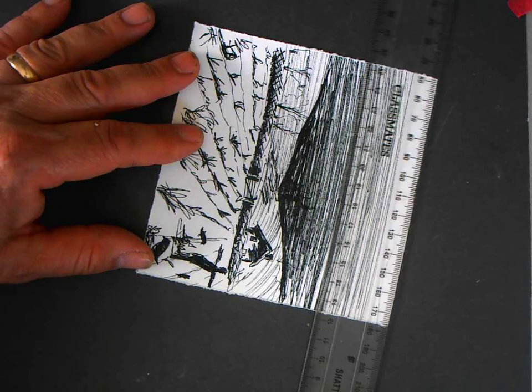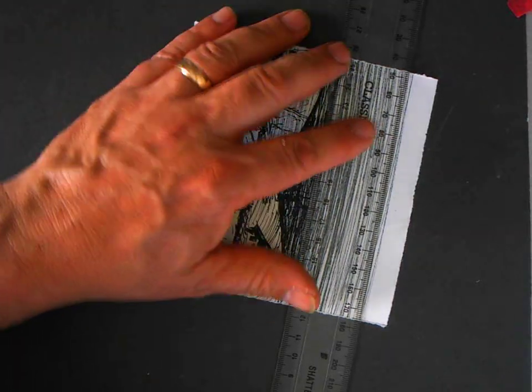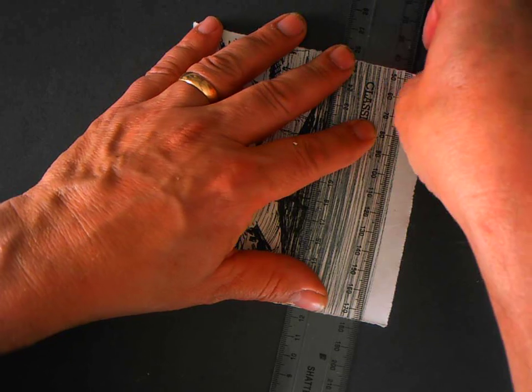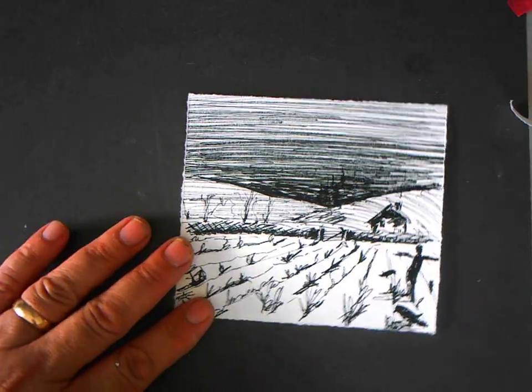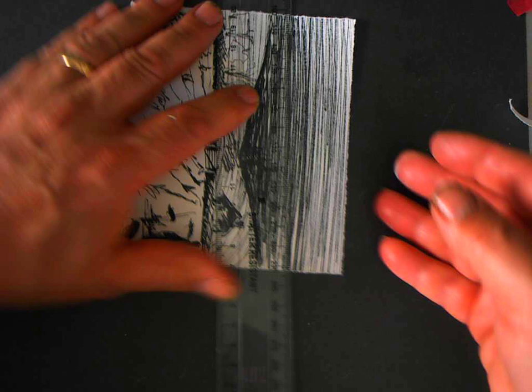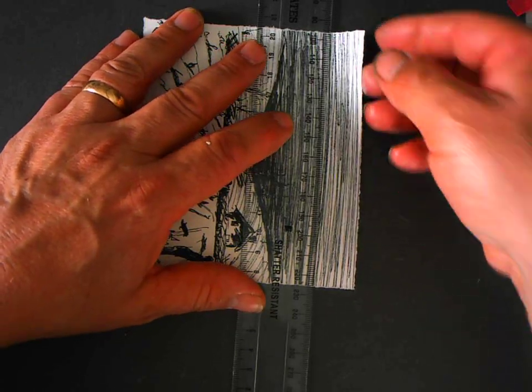And then I can decide how far I want my sky down. If I cut it and I think, oh no, I want that a little bit lower, you can then go through and then just take off a little bit more. You can't add bits on of course.